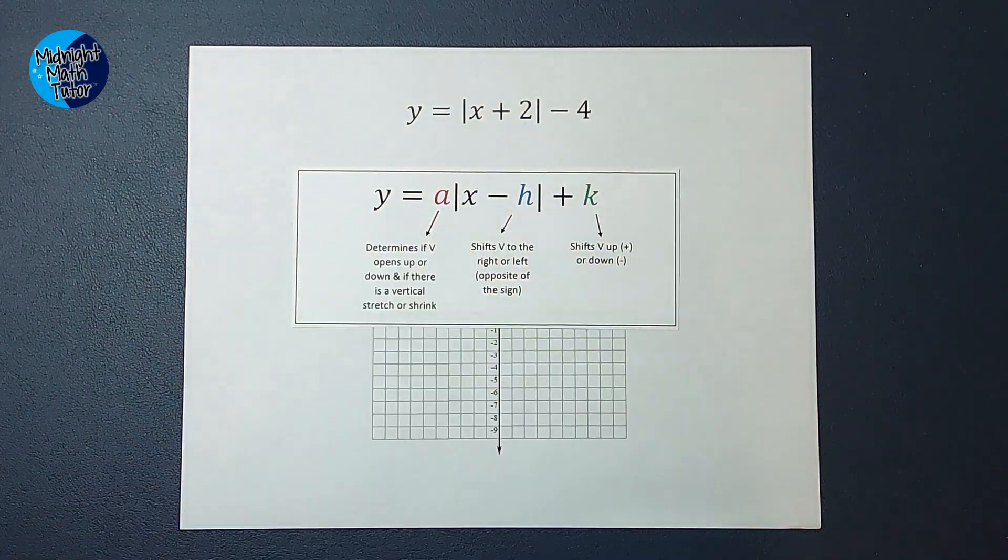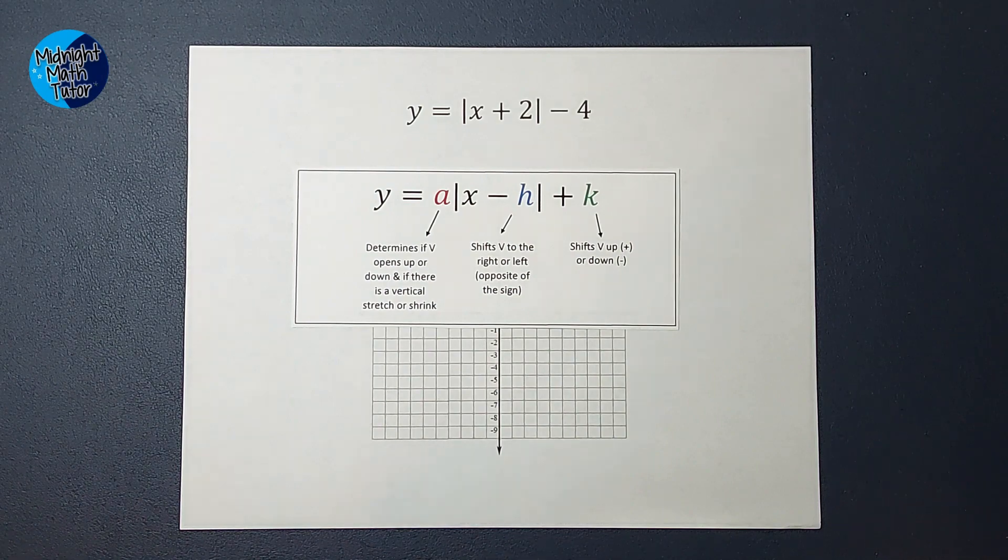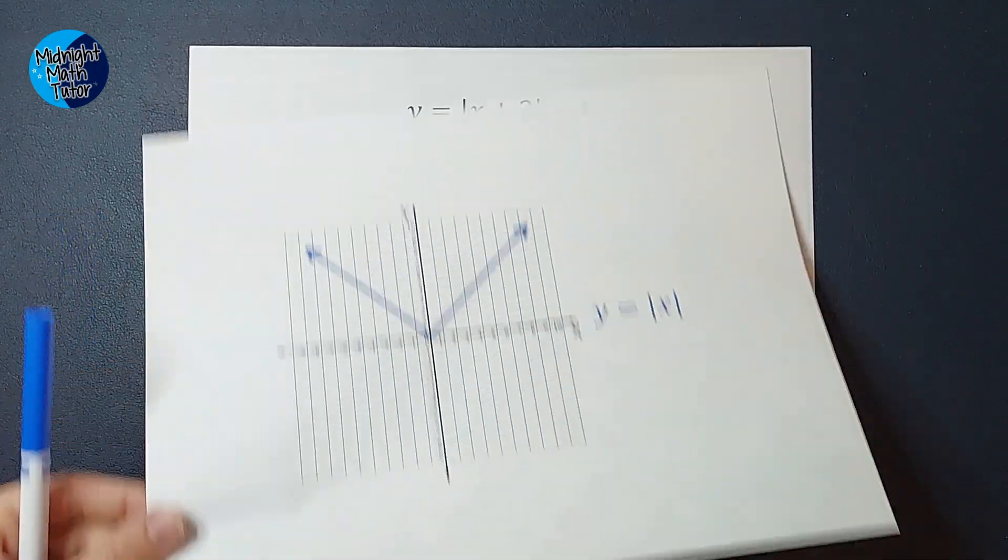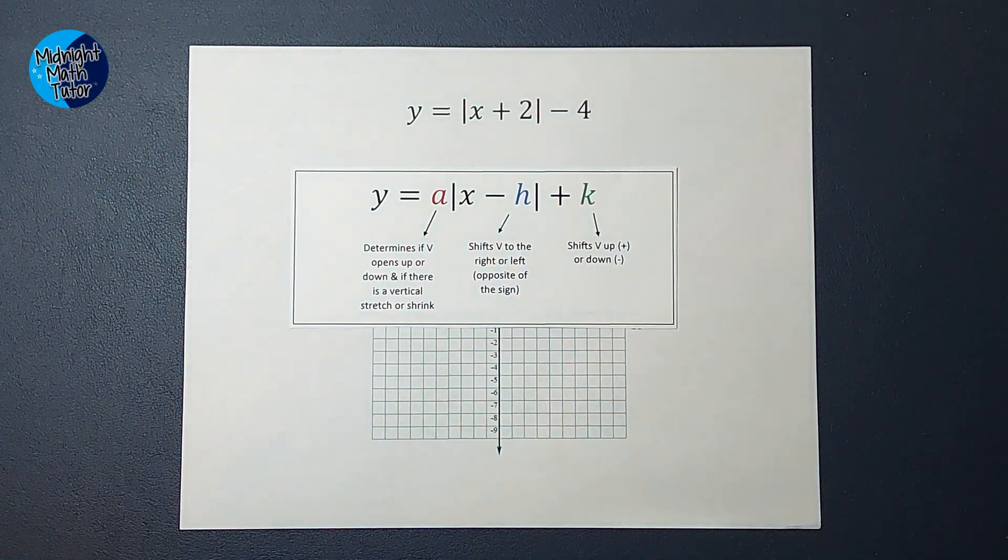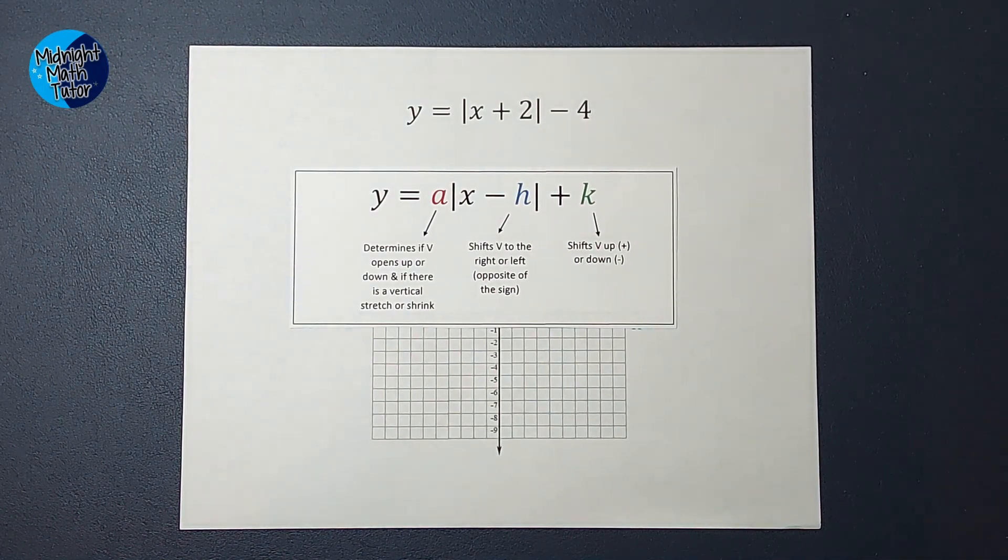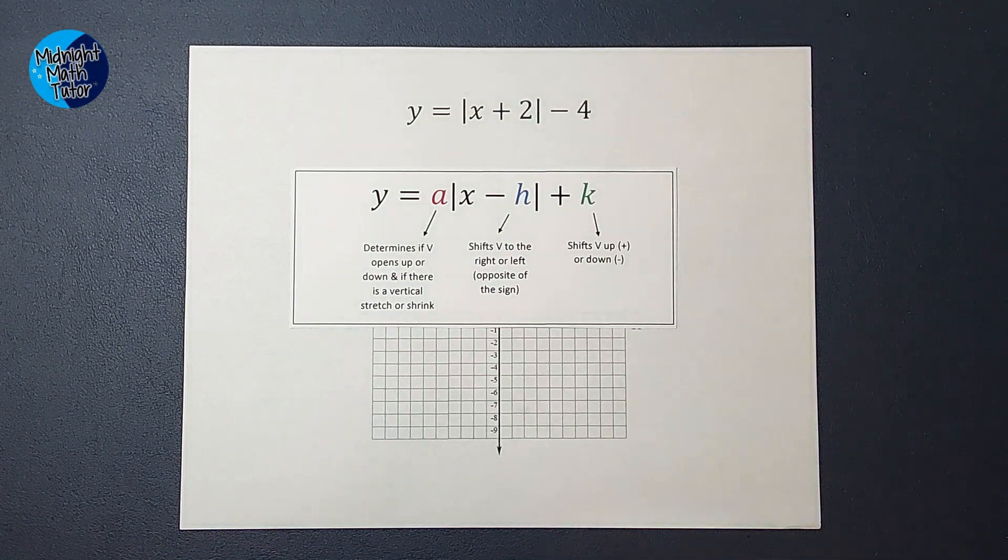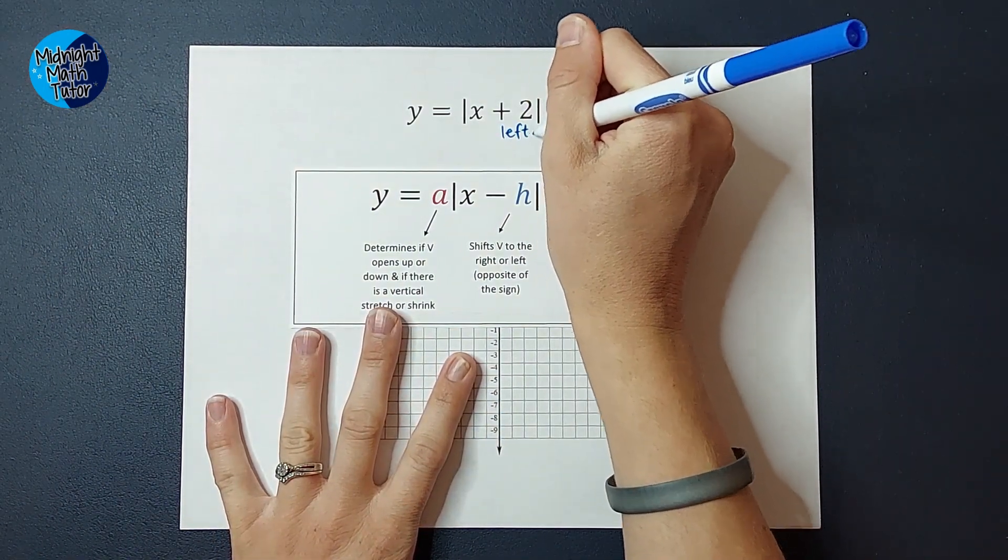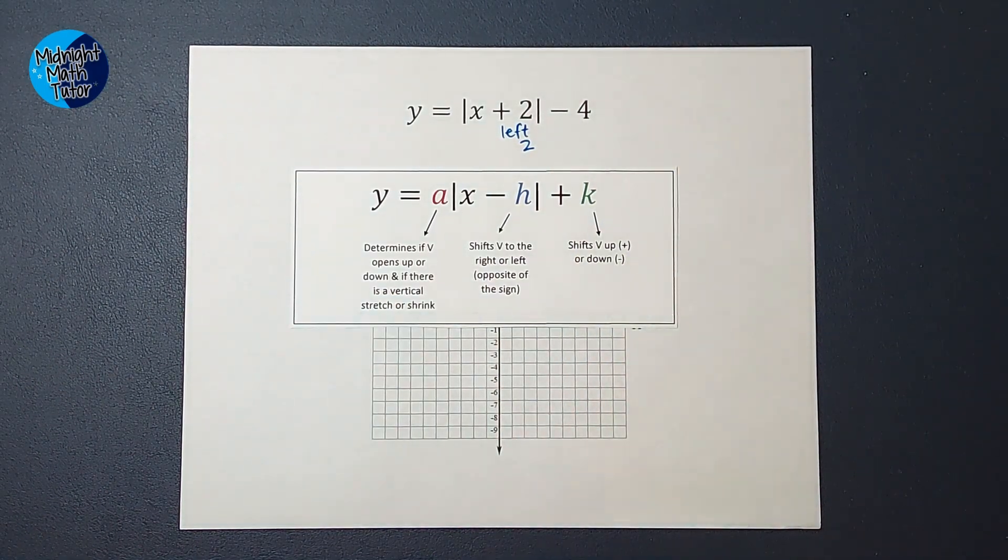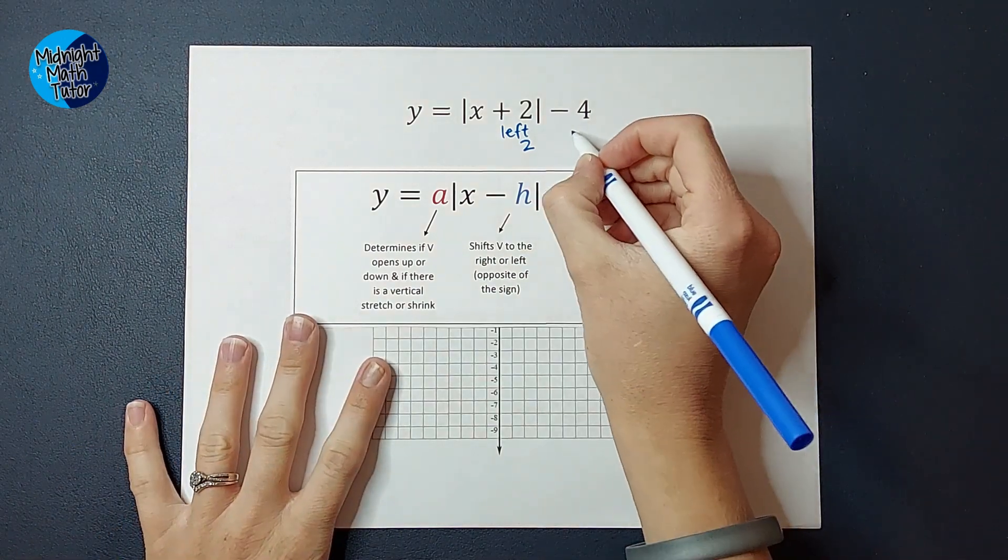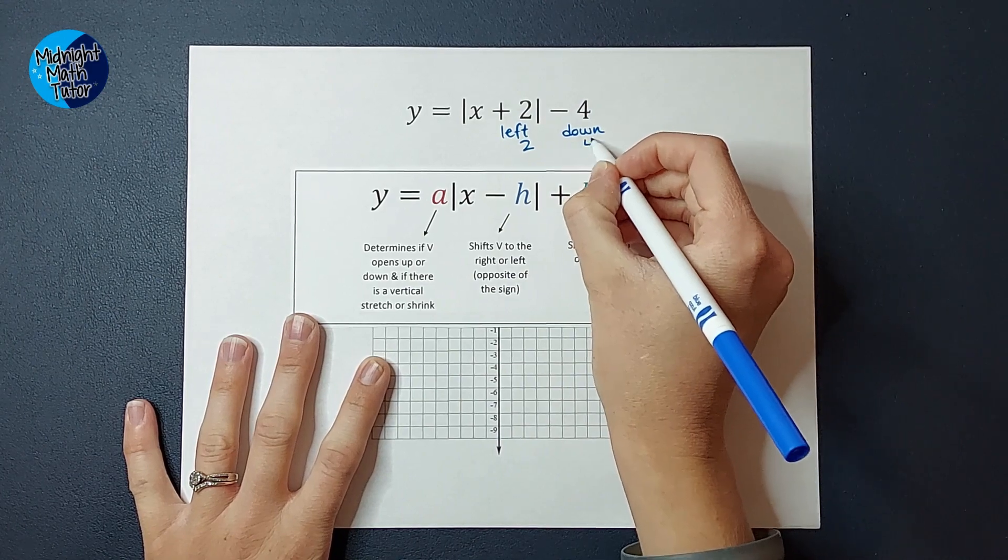If you have a number being added or subtracted inside the bars, that tells you how far your graph shifts to the right or left. So talking about our vertex, that is this point where they meet, where it turns, that's called your vertex. The H and K tell you where that vertex shifts to. The H or this number inside of here tells you right or left, and you actually go opposite of the sign. So when you see plus two, you might think to the right two. But when it's inside there, we actually do opposite. So the graph is going to be shifted to the left two. And then that guy being added or subtracted on the back tells you how far the graph is being shifted up or down. And with this one, you stick with the sign. So since it's minus four, we are going to shift our graph down four.